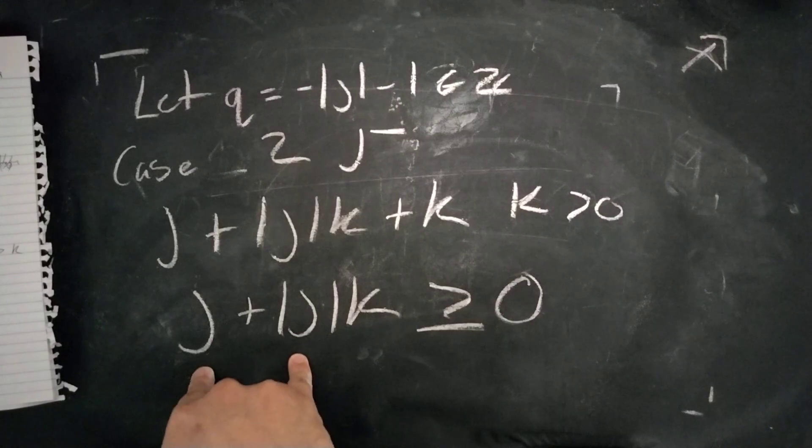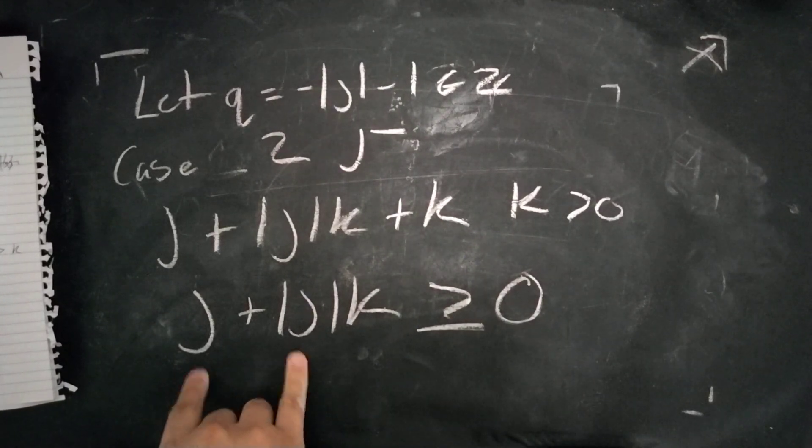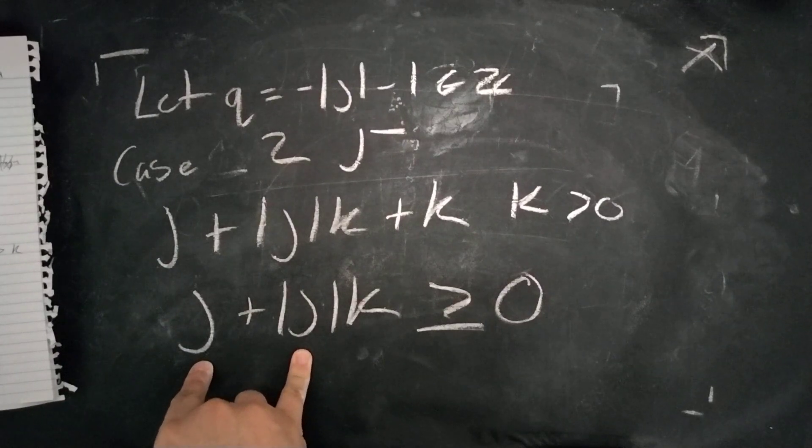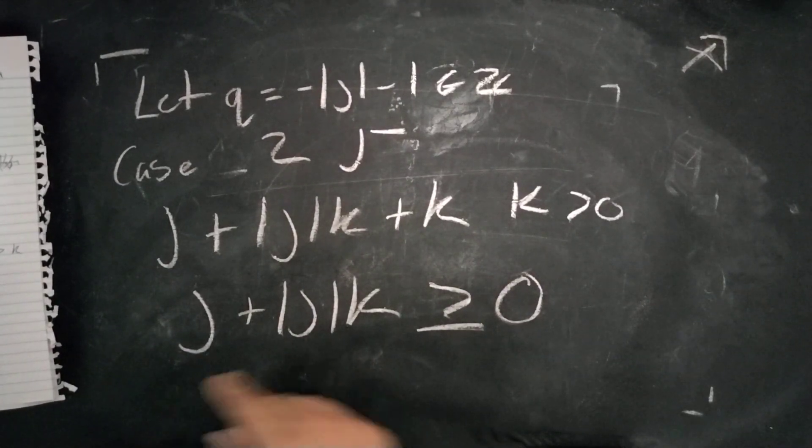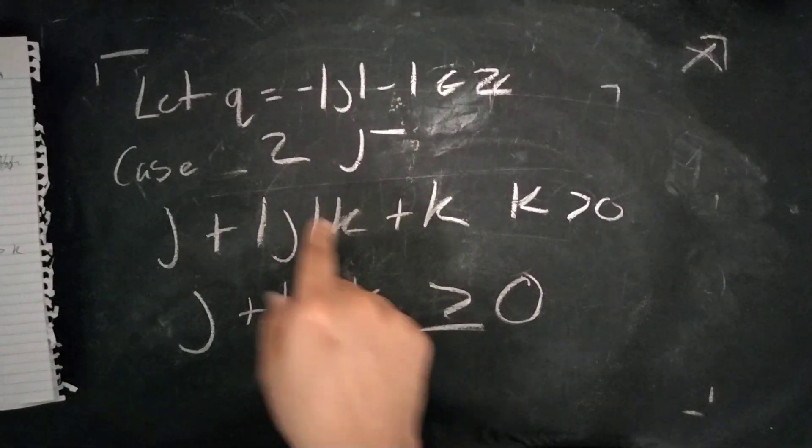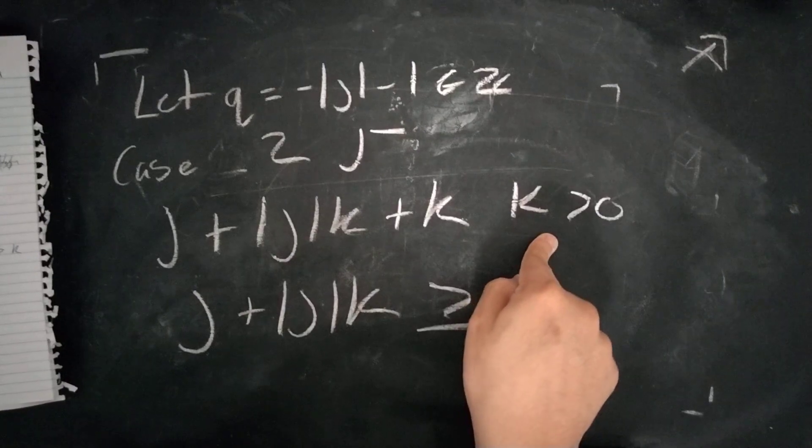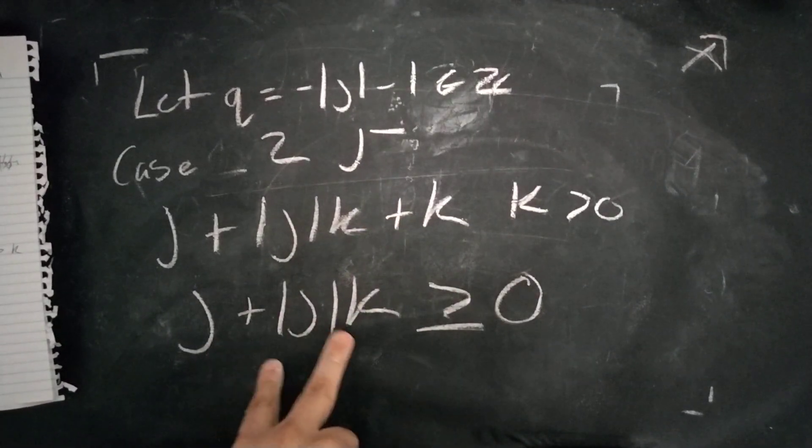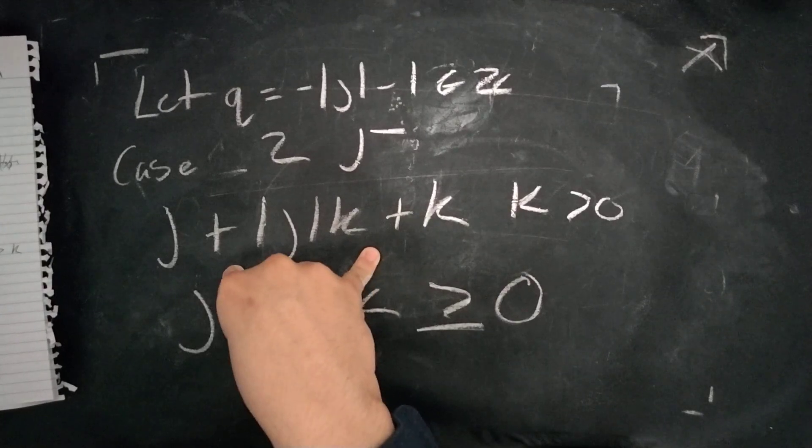And so, this would just be, you'd just be adding negative J plus J. And any value aside from one would clearly be greater than zero. And even at zero, you would just cancel this out and this would just be K, which is, again, greater than zero. That implies that this is both positive and an integer.